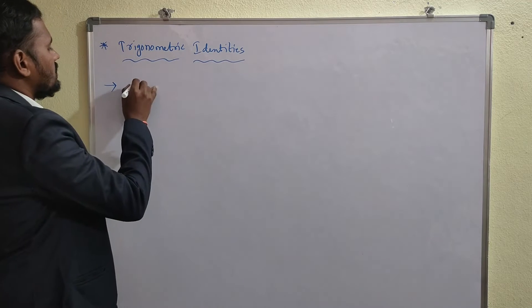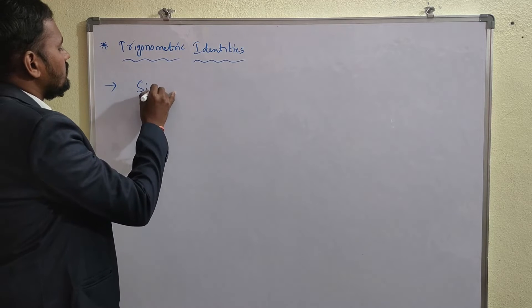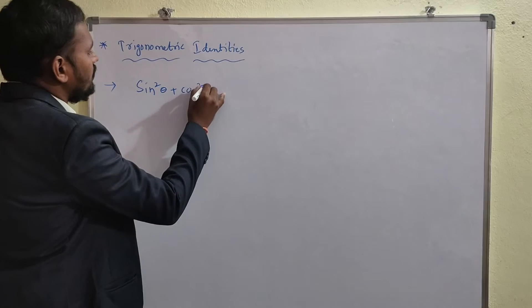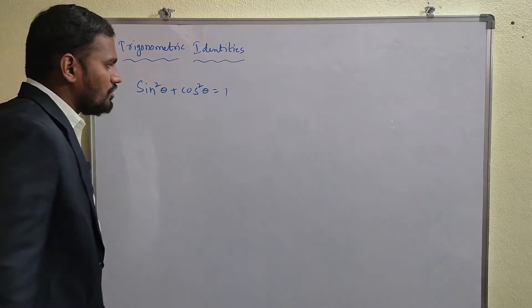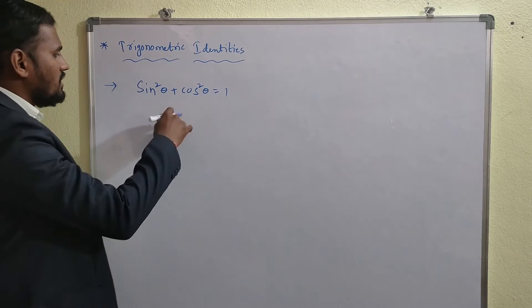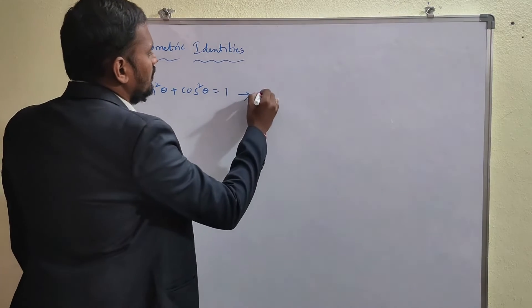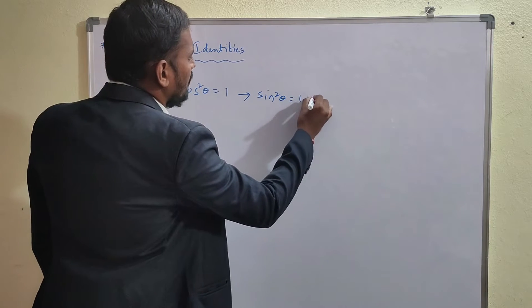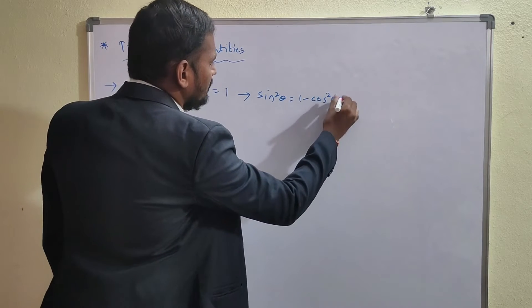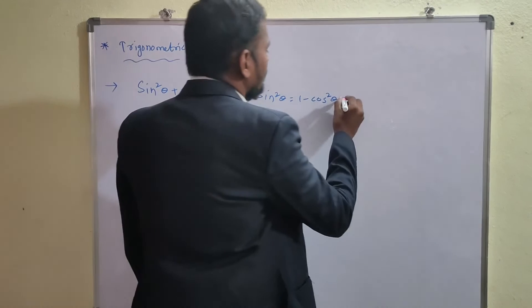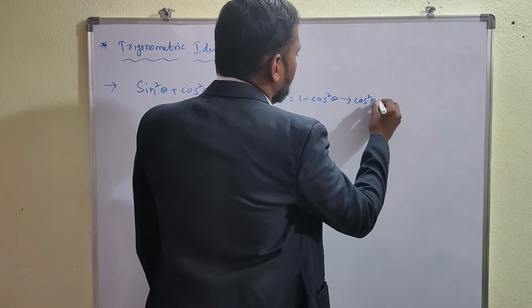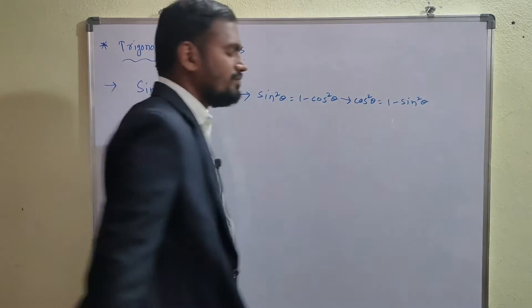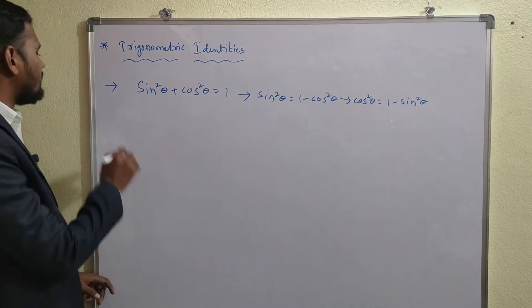The first identity is: sin²θ + cos²θ = 1. From this you can write sin²θ = 1 - cos²θ, and cos²θ = 1 - sin²θ.